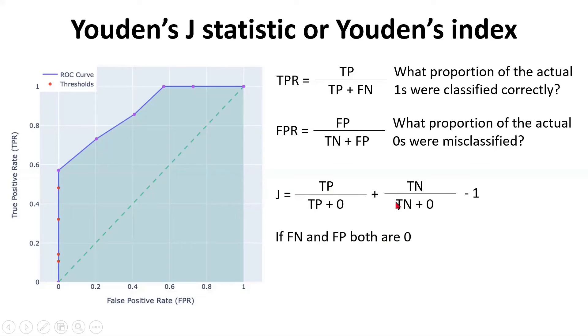And you add this true negative divided by true negative plus zero, which is nothing but true negative. So true negative by true negative is again one. So you have one plus one and you're doing a minus one. So this value is one now. In case of a perfect model, the value of J statistic is one. That's what it implies.